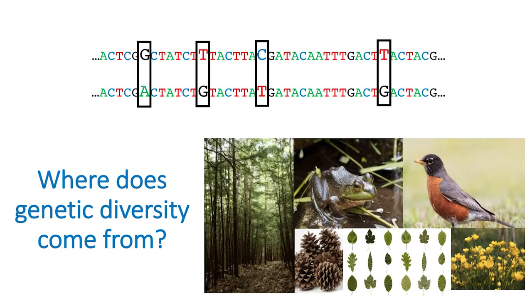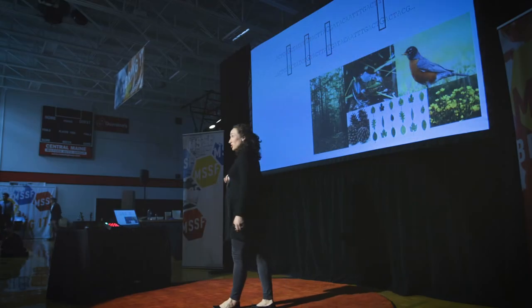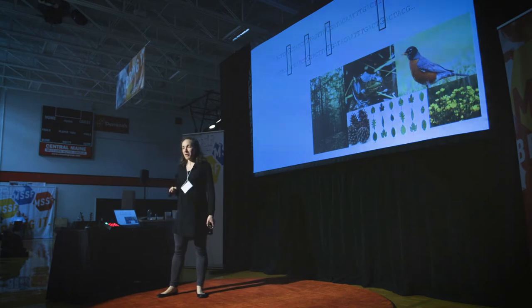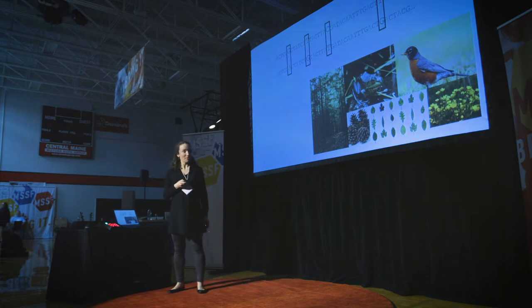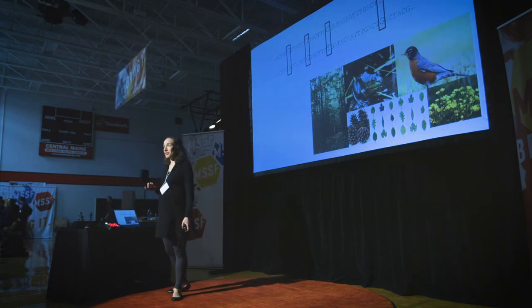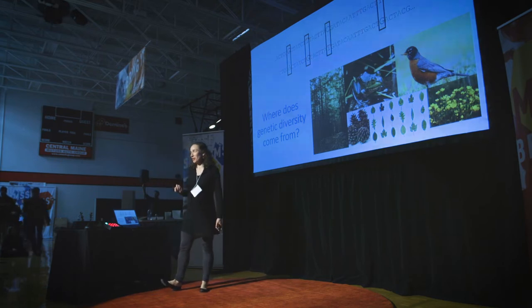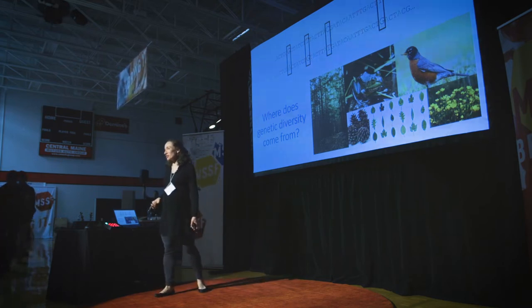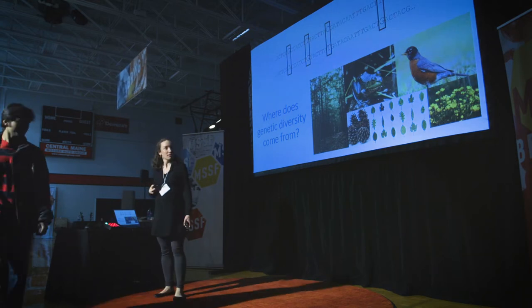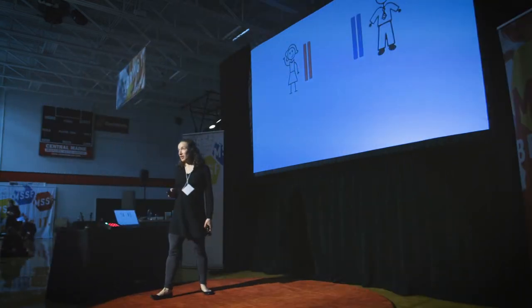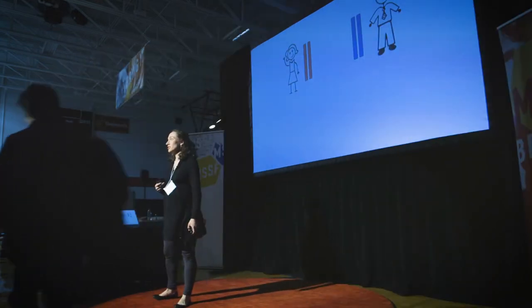As a geneticist now, I understand that differences in our genetic code — in our genomes — underpin the variation that we see in the natural world. But if we think about this, it really just moves the question back a level: genetic differences can encode for differences in biodiversity across the globe, but where do those genetic differences themselves actually come from? This is the biological question that continues to pique my curiosity and drives my research program at the Jackson Lab.